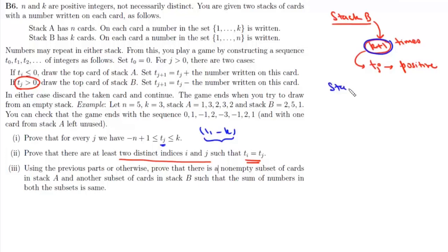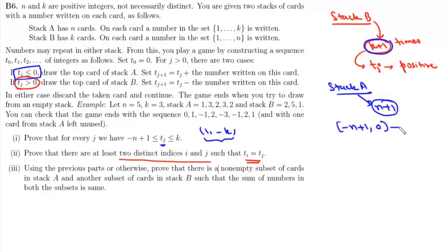Similarly, if stack A is empty, we need to have drawn n+1 times from stack A. We draw from stack A when T_j is less than or equal to 0. From part one, the total number of distinct non-positive values is n (from -(n-1) to 0). Since we have n+1 non-positive values drawn from only n possibilities, at least one value must be repeated. So in this case too, there exist two different indices i and j such that T_i equals T_j.